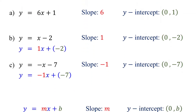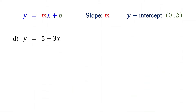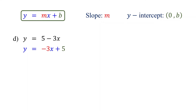Now try this one. What are the slope and y-intercept? You can rewrite this as y = -3x + 5. This is the same as our original equation, so it is clear that the slope is negative 3, and the y-intercept is (0, 5).